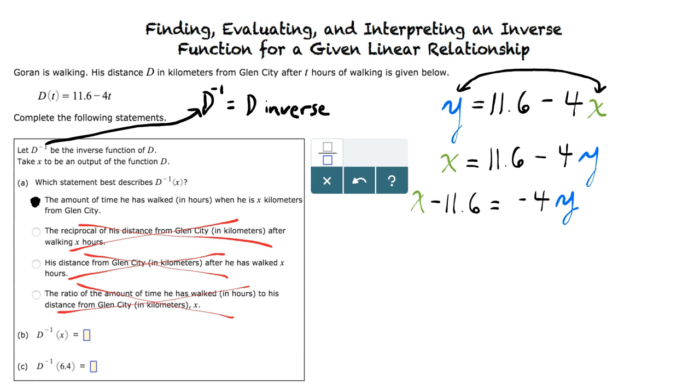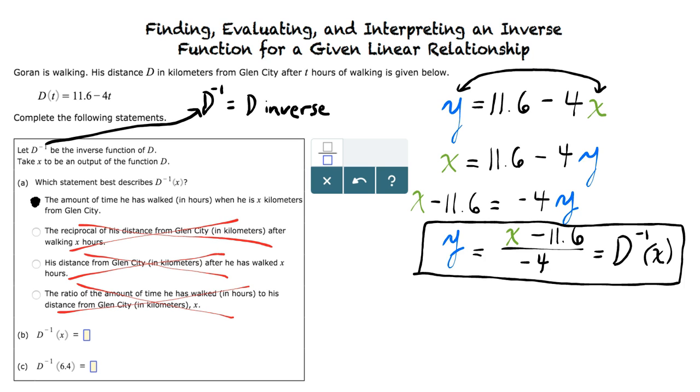This results in x minus 11.6 equals negative 4y. Then, to solve for y, we divide both sides by negative 4, which indeed results in y equals x minus 11.6 all over negative 4, which is equal to d inverse of x. Good job! That's the answer for part b.